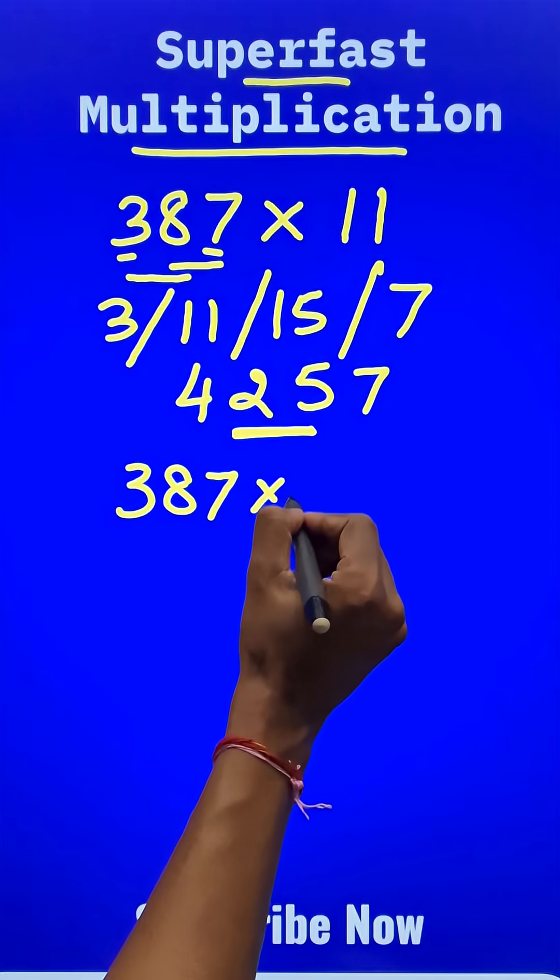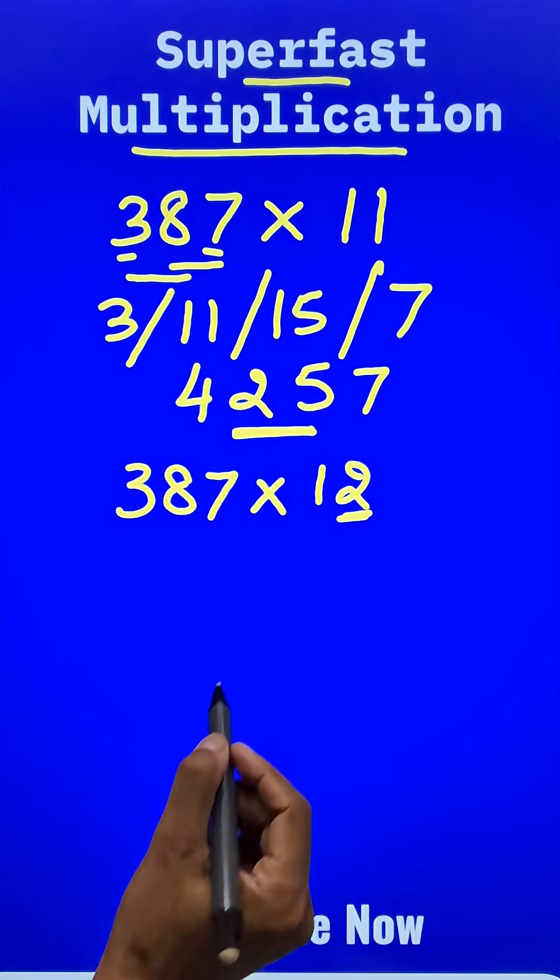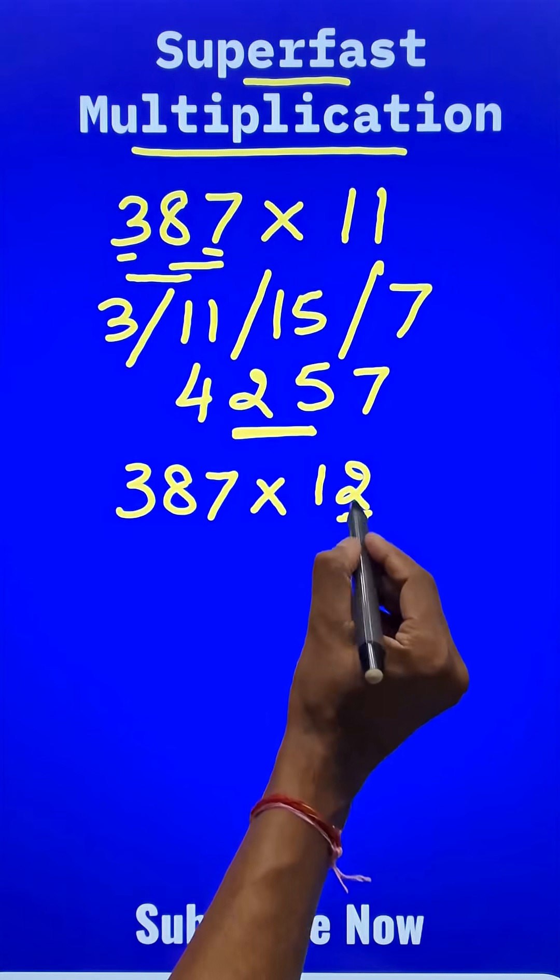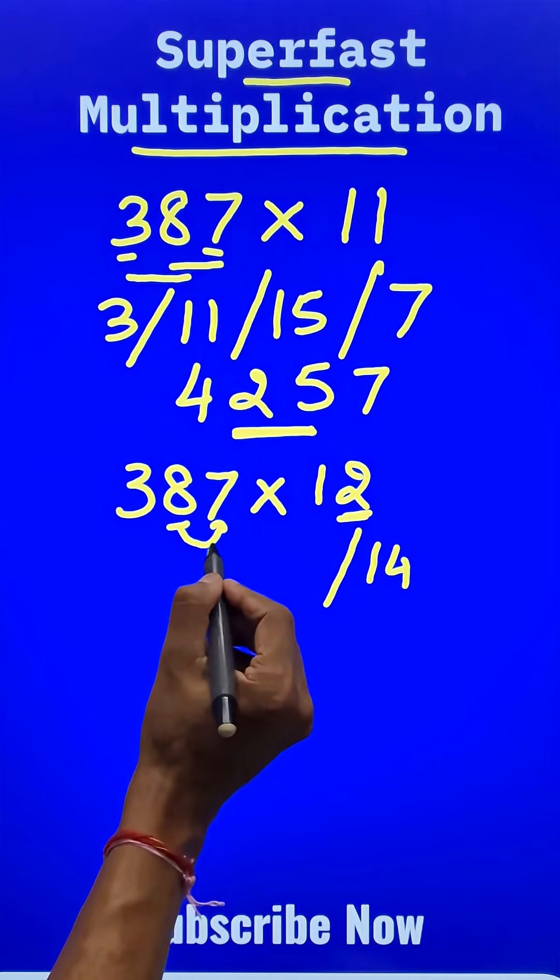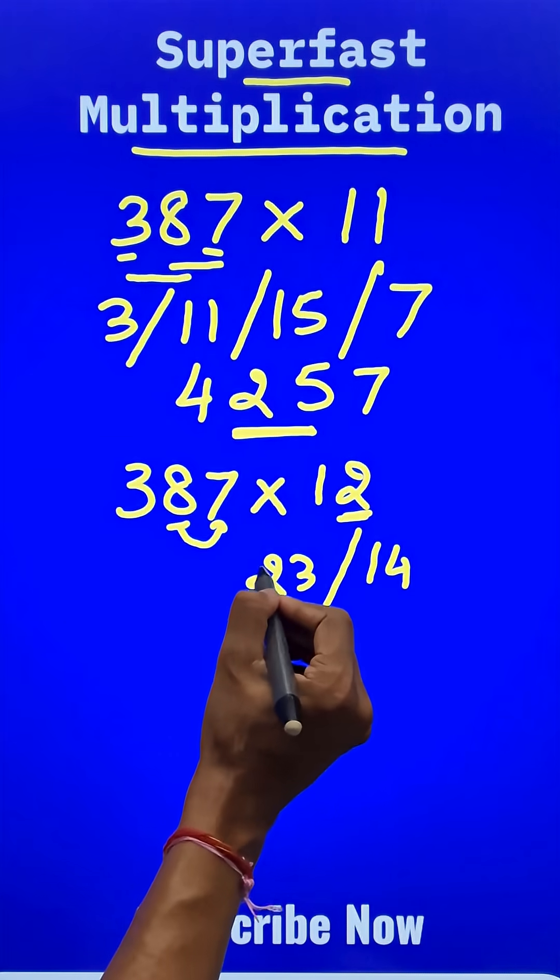Likewise, if you have to do 387 times 12, now since there is a 2 here, double 7. 7 twos are 14, so start with a 14. Then 8 twos are 16, and add the next number: 16 plus 7 is 23, so I will write 23 here.